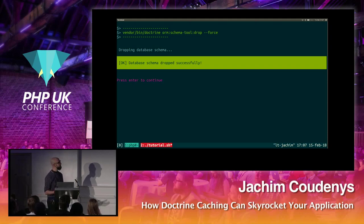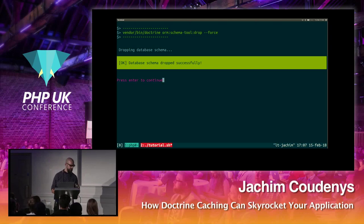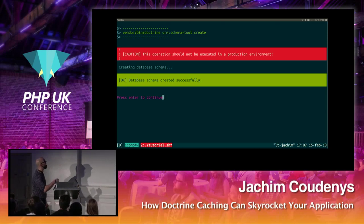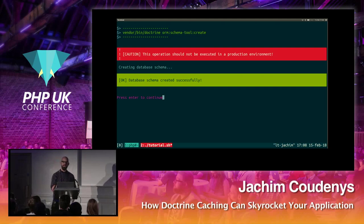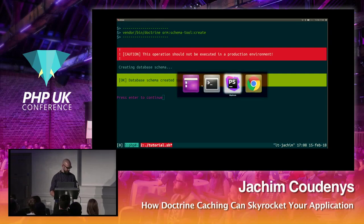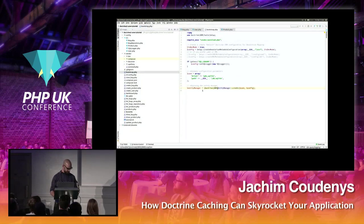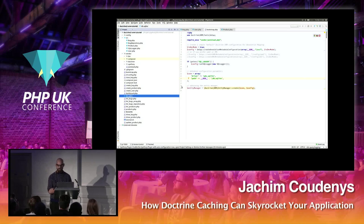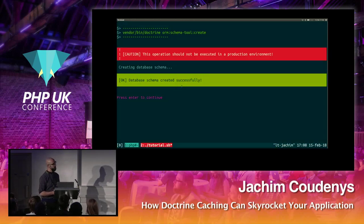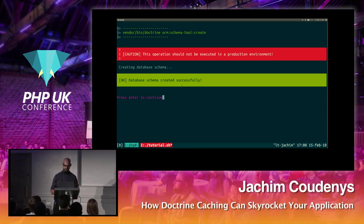Here we have a schema tool. I'll drop the existing schema and create it again. The schema tool reads all the annotations and generates a database — in our case a SQLite database. We now have a new database with all the schema definitions necessary to run this tutorial.